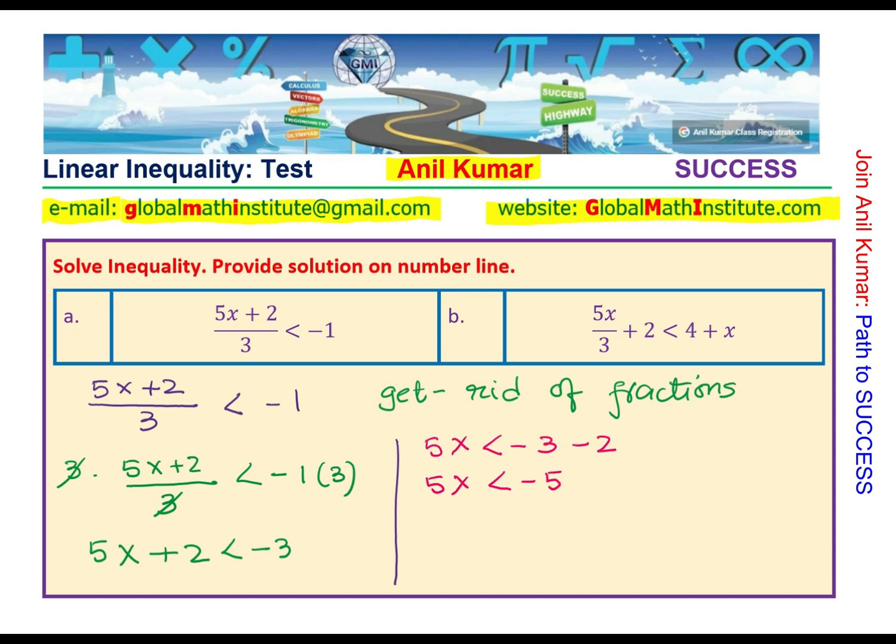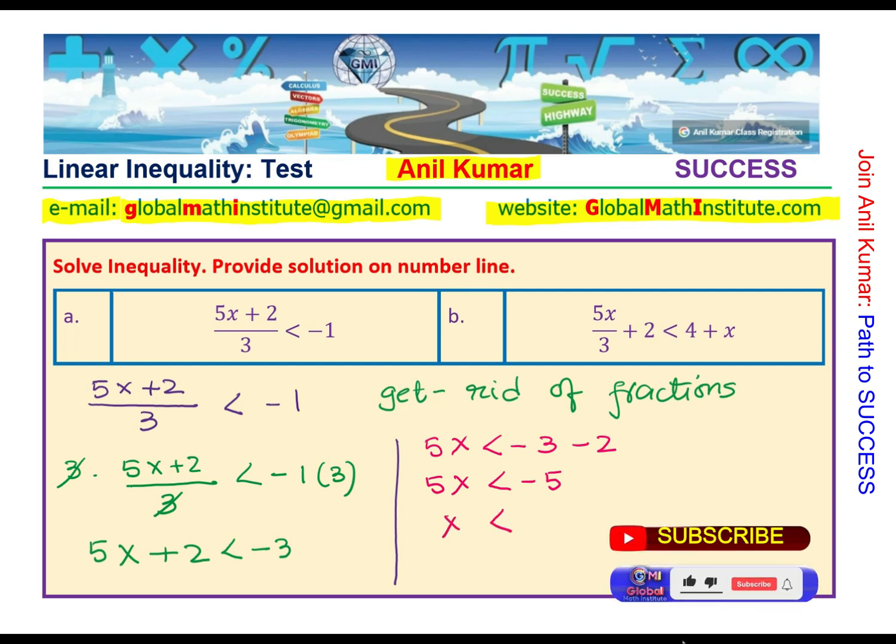Just as you do in equations, you can now divide by 5. Since it is positive, the inequality sign is not changed. So, we get minus 5 over 5 or x is less than minus 1. So, we got the solution.